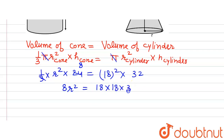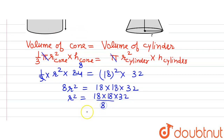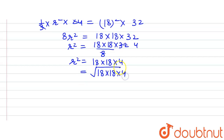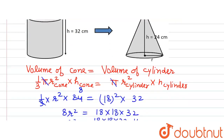Expanding: 8r² = 18 × 18 × 32. Dividing both sides by 8, and since 32 ÷ 8 = 4, we get r² = 18 × 18 × 4. Taking the square root: r = √(18 × 18 × 4) = 18 × 2 = 36 cm. So the radius of the cone is 36 cm.